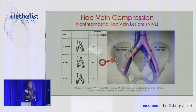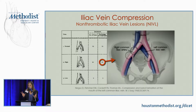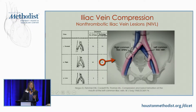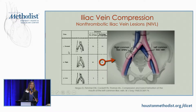Non-thrombotic iliac vein lesions, or NIVL, are lesions like May-Turner, but there are also a couple other points of compression. You can have compression of the left iliac vein — classic May-Turner — beneath the right iliac artery. You can also sometimes get compression of the proximal right common iliac vein underneath the right common iliac artery, depending on the anatomy. And at both of the hypogastrics, that can be a point of fixation.